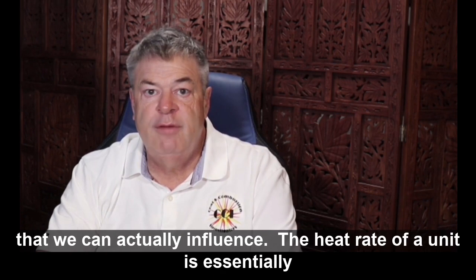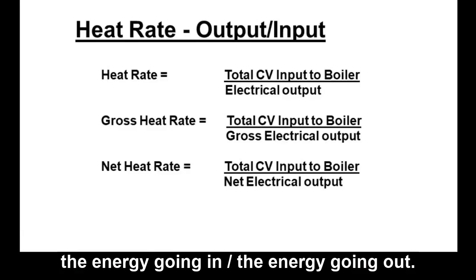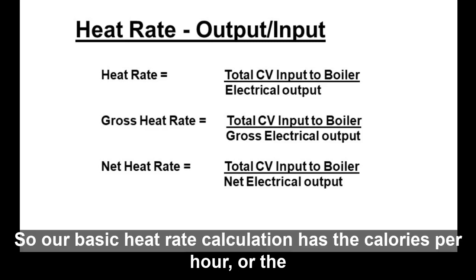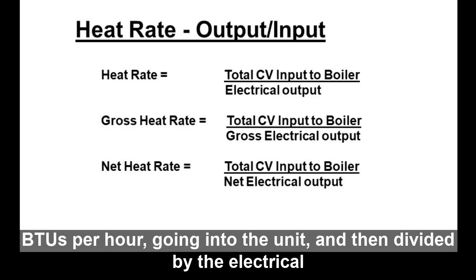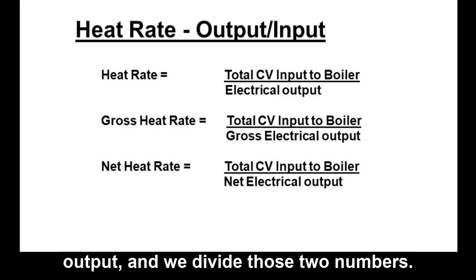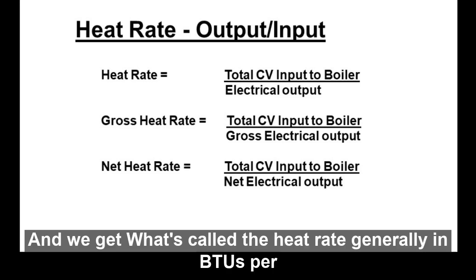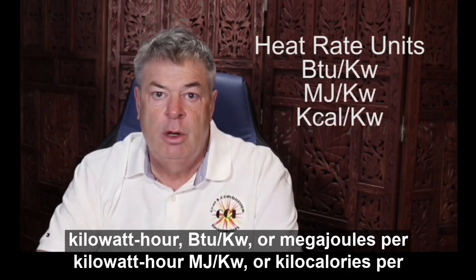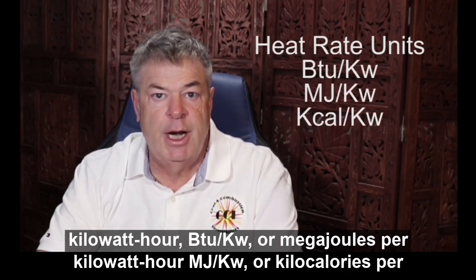The heat rate of a unit is essentially the energy going in divided by the energy going out. So our basic heat rate calculation has the calories per hour or BTUs per hour going into the unit, divided by the electrical output. We divide those two numbers and get what's called the heat rate, generally in BTUs per kilowatt hour, megajoules per kilowatt hour, or kilocalories per kilowatt hour.